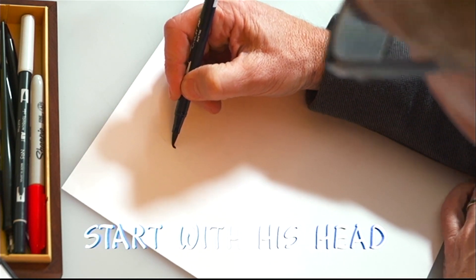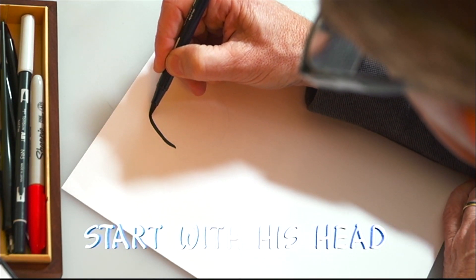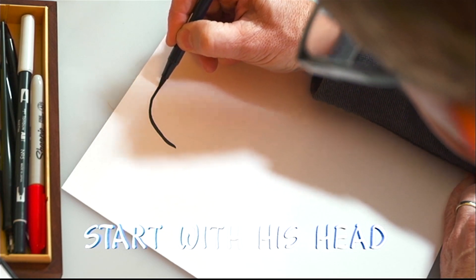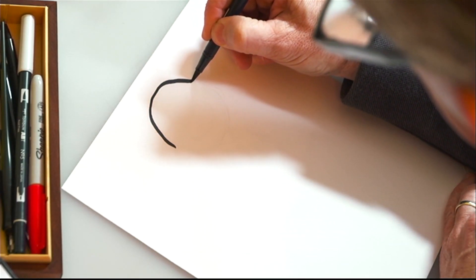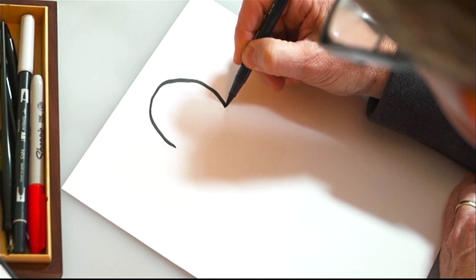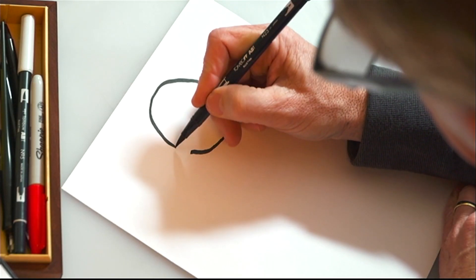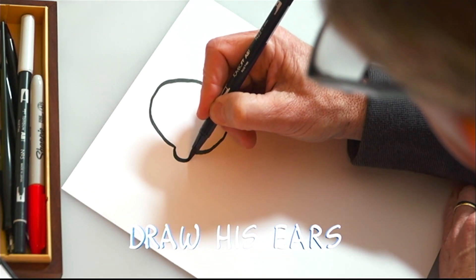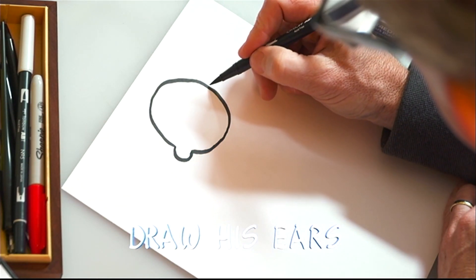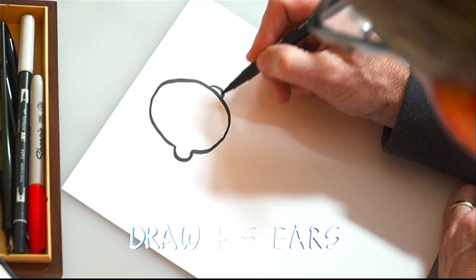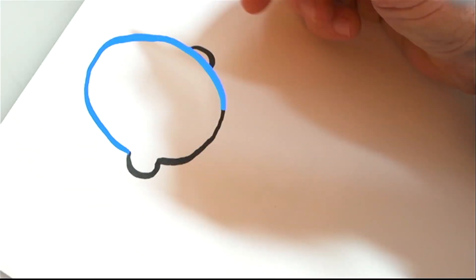First, we're gonna start with the head. Charlie Brown's head is shaped almost like a big circle. We're gonna start on one side and continue almost all the way around, stopping just before completing the circle. Next, we'll draw his ears. The first ear completes the shape of his head. The second ear goes just outside the opposite side of the circle. Pause the video now to practice drawing Charlie Brown's head and ears. Then, push play when you're ready to continue.